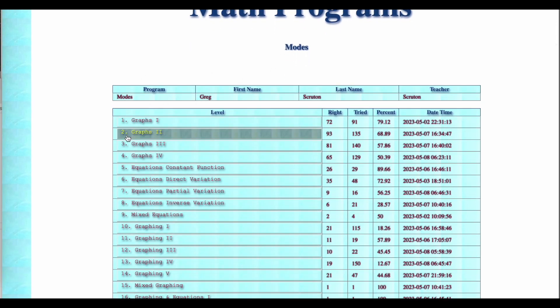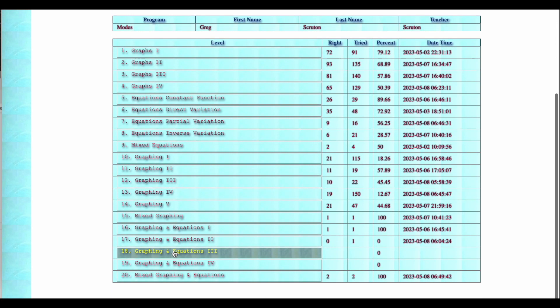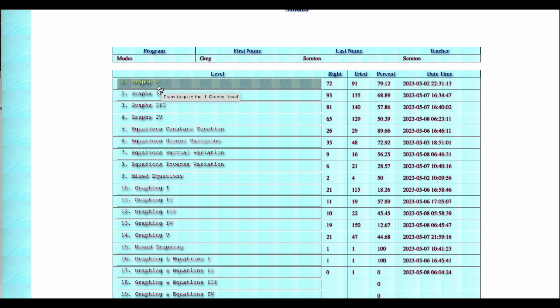Welcome to the Modes math program. We have 20 different levels. First levels are reading graphs. Then the next levels 5 to 9 are looking at tables of values and finding the rule or the equations for them.